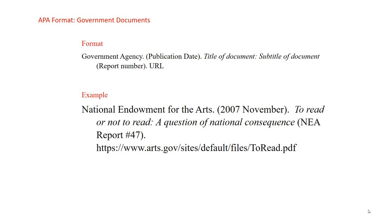In APA, the citation begins with the government agency as the author. Make sure you have the specific office that authored the material. Include the name of the state, city, or other government entity only if it is part of the name of the agency. The complete date is provided with the year, month, and day as provided on the document or website. The title is in italics with only the first word of the title and subtitle capitalized. And if the report has a publication number, put that in parentheses after the title.